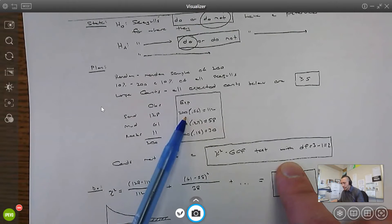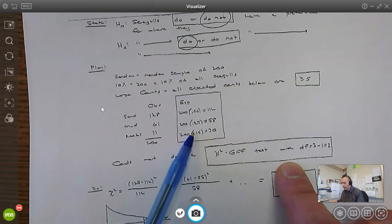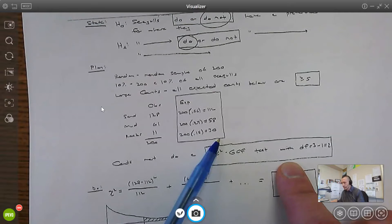I took the observed. There was a total of 200 seagulls. We expect 56% to land on sand, 29% mud, 15% rocks. Found those percentages. Those are my expected values.